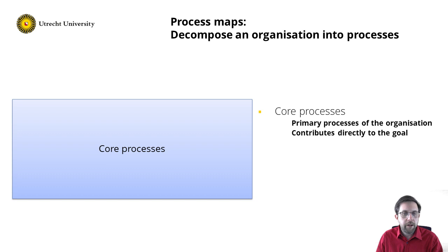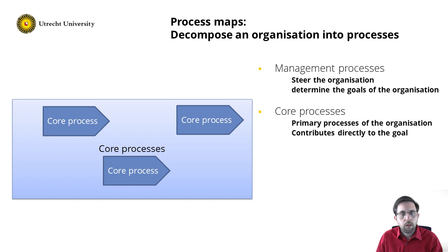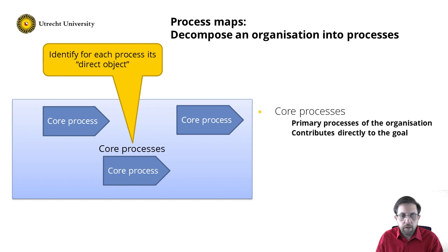In a process map, we classify all processes we can identify into three classes. The first class are the core processes, which directly contribute to the goals of the organization — these are the primary processes that directly add value. Examples include manufacturing processes or services delivered to customers. We draw core processes using a box with a sharp edge pointing to the right, emphasizing that they directly contribute to the goal. Importantly, you should also identify the process instance — the direct object the process is about — and document it with your process map so you do not forget.